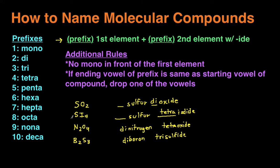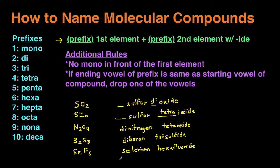One more example: SeF6. Se is the first element — selenium. We have one Se, which is 'mono,' but remember we don't use 'mono' for the first element, so it's just 'selenium.' For the second element, F is fluorine, and we add '-ide' to the end, giving us 'fluoride.' We have six of them, and the prefix for six is 'hexa,' so it becomes 'hexafluoride.'